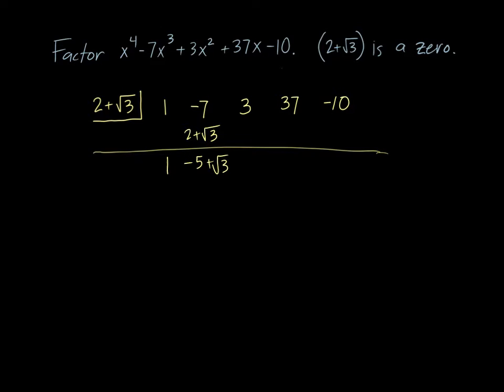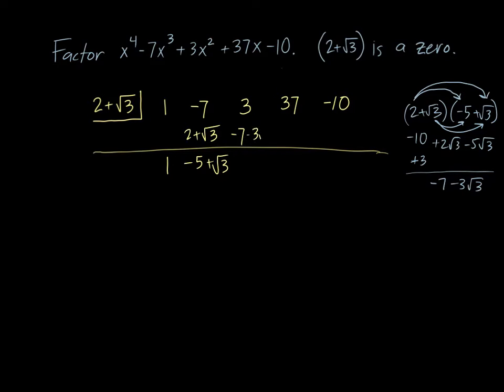Now this is the first part where the multiplying is going to take a little extra work. Just off to the side, I need to multiply 2 plus the square root of 3 by negative 5 plus the square root of 3. When I multiply this out using FOIL, I get negative 10 plus 2 square root of 3 minus 5 square root of 3 plus 3. Overall, I get negative 7 minus 3 times the square root of 3, and that's the result that goes here.